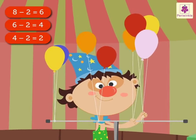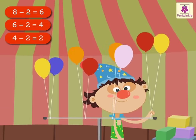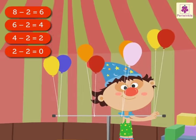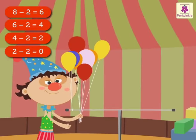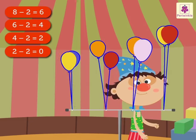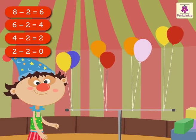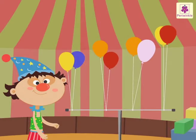Now he ties two more balloons from four. He is left with two balloons in his hand. He ties the last two balloons. Now he is left with zero balloons in his hand. When Jojo tied eight balloons into equal groups of two, he got four groups. Here, he tied the same number repeatedly. This process of dividing the objects into equal groups is called repeated subtraction.